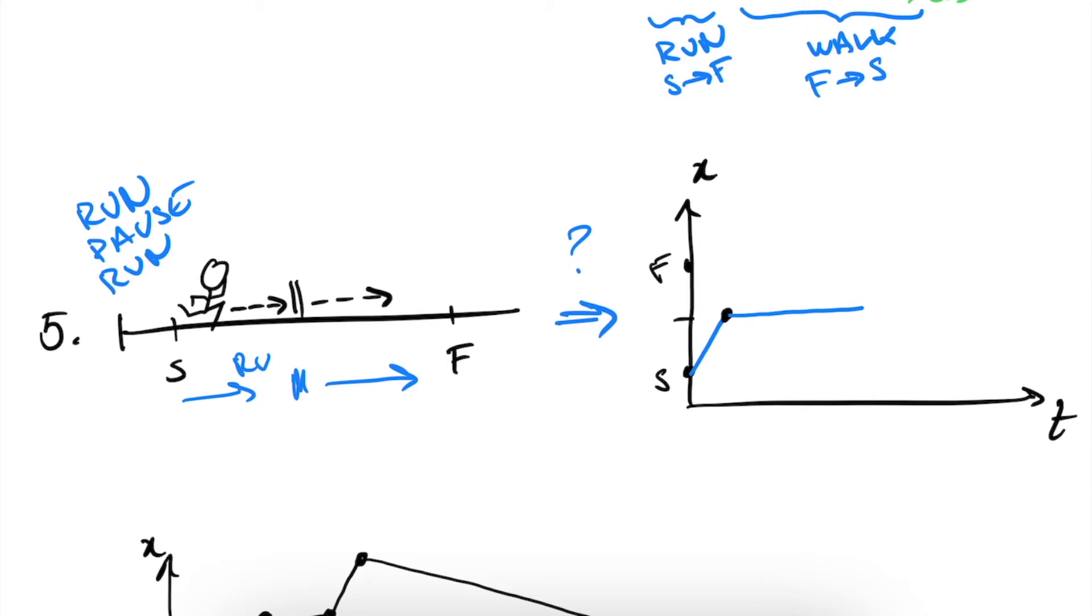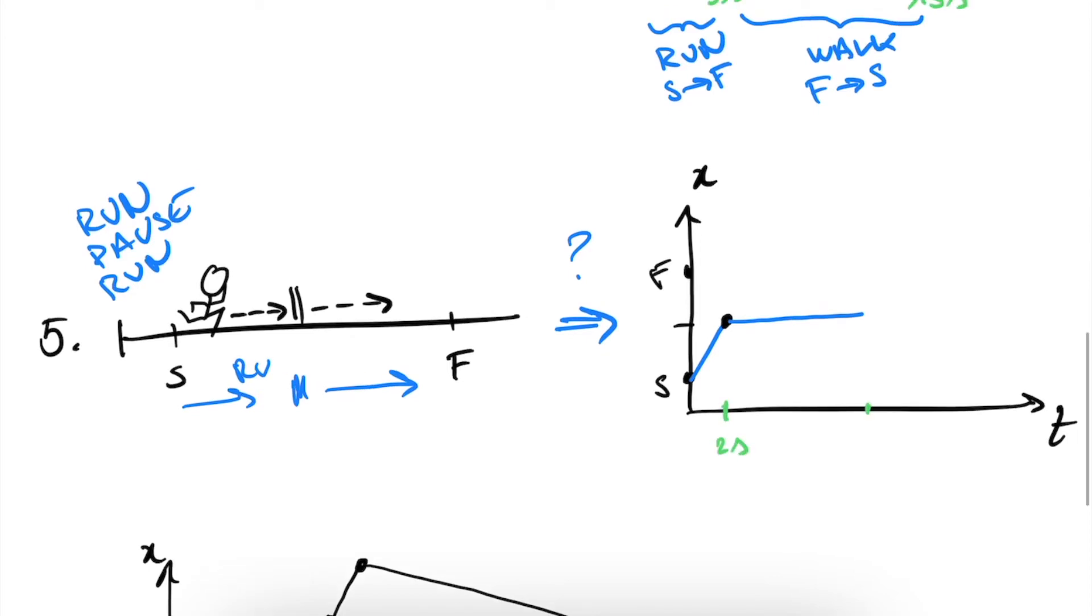What this means on our graph is that we get a period where our curve is flat. And let's say we first run two seconds, and then we pause, let's say 10 seconds. So this will be 12 seconds. And then we are at this point, this midpoint. And then we just run from our midpoint to our destination in an exactly same fashion as we did our first run.